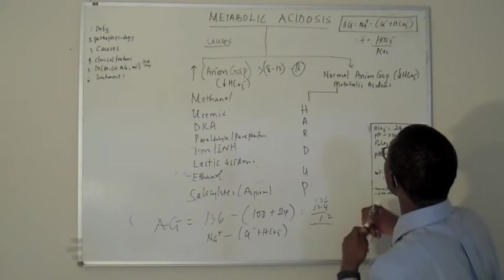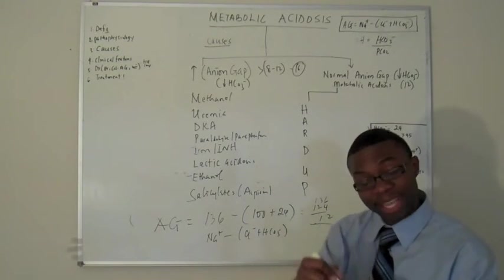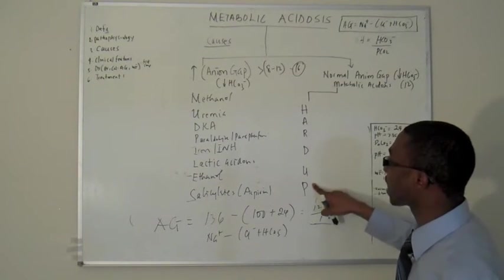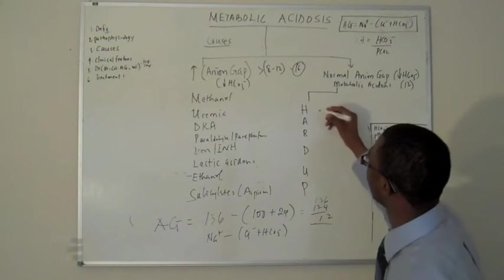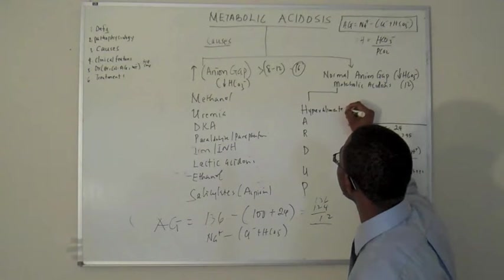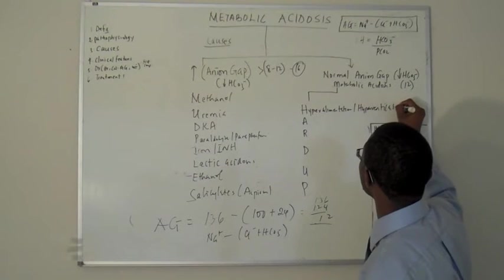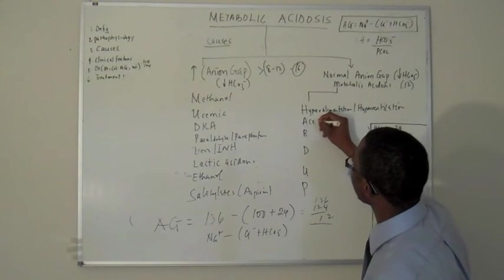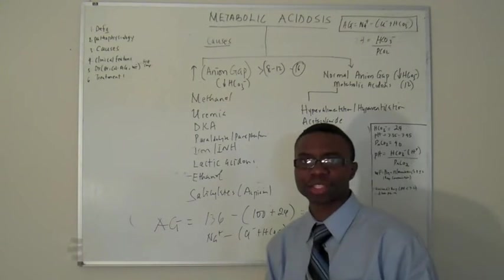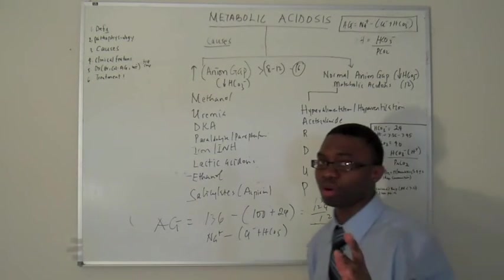If it's higher, you know it's gapped. If it's normal, and you get around 12, but still the bicarb is low, it's telling you they still have metabolic acidosis, but one of these guys called HARDUP is causing it. So, what does HARDUP stand for? Hyperalimentation or hyperventilation. Acetazolamide. Do you know what that is? It's a diuretic. It's a carbonic anhydrase inhibitor. Before I go on, I'm sorry.